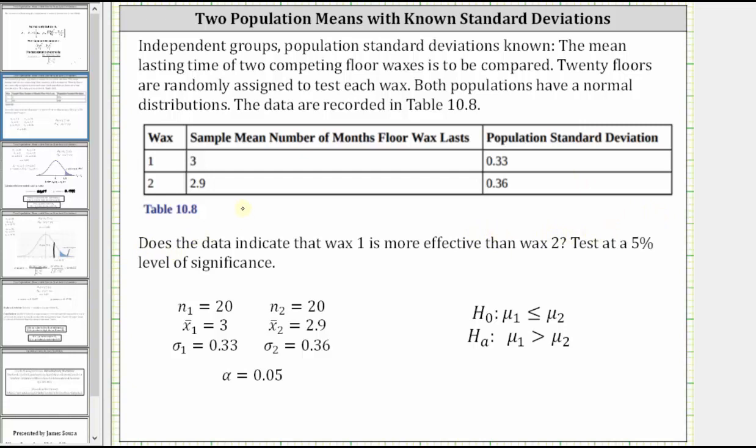Let's begin by listing all the given information. 20 floors are randomly assigned to test each wax and therefore the sample size for both waxes is 20, which means n₁ equals 20 and so is n₂, where the subscripts indicate which wax. The sample mean for wax one is 3, x̄₁ equals 3. The population standard deviation is 0.33, σ₁ equals 0.33. Now looking at wax two, notice how x̄₂ is 2.9 and σ₂ is 0.36. Because we are testing at a 5% level of significance, α equals 0.05.